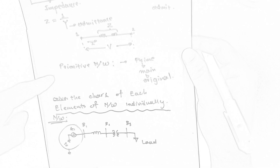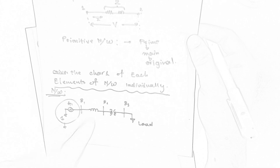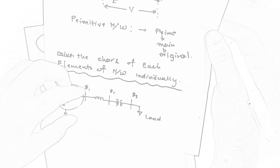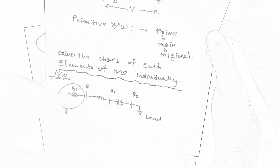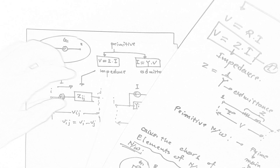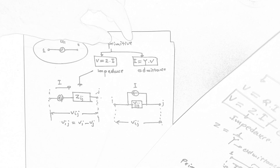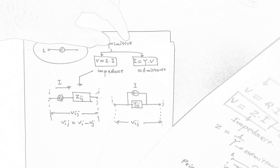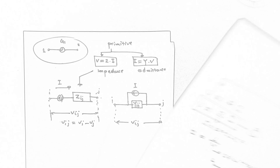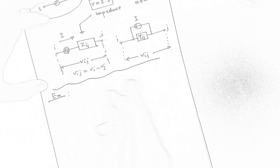To review: what does primitive network really mean? In our sample system, if you have a network, we separate one of the elements and represent the characteristics of that element — voltage, current, and impedance or admittance — separately. We find and represent those characteristics in two forms: primitive impedance representation and primitive admittance representation. In the next lecture, we will go through a good example for understanding the primitive network.